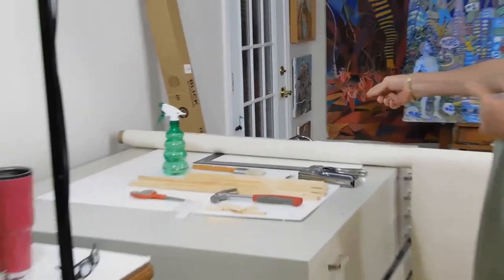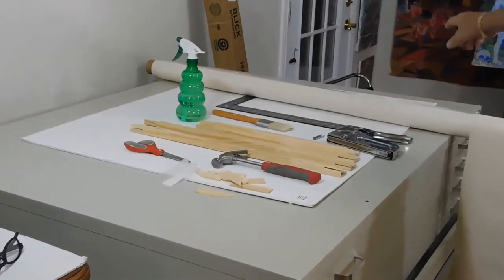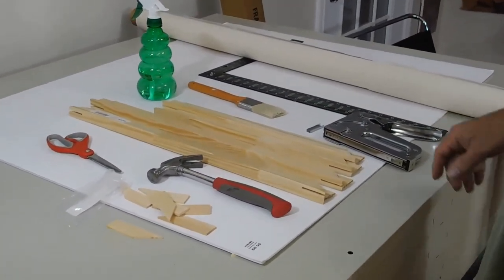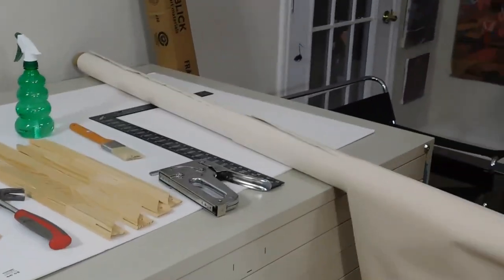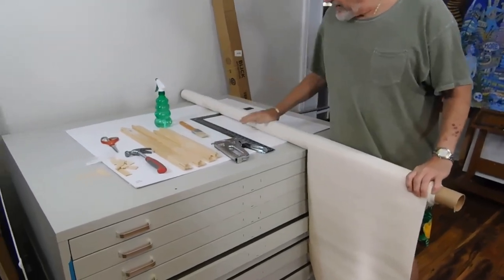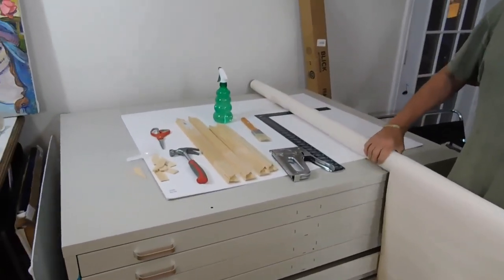These are all the supplies and tools that I'm going to use. First of all, I've got the canvas, the stretcher strips, the keys. I buy it all from Dick Blick.